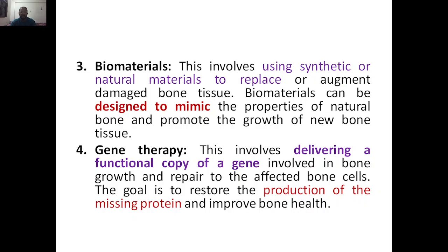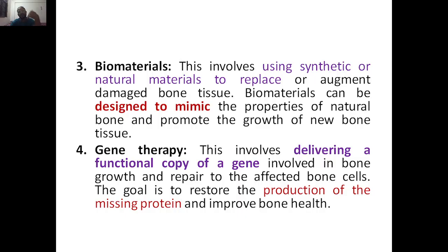Next we have gene therapy. Gene therapy involves manipulating genes. For example, if a person with osteoporosis has a defective gene that codes for a protein responsible for bone formation, that protein is not being produced properly, which is why the bones are weaker. You deliver a functional copy of that gene — the gene involved in bone growth and repair of affected bone cells. The goal of gene therapy is to restore the production of the missing protein and improve bone health.